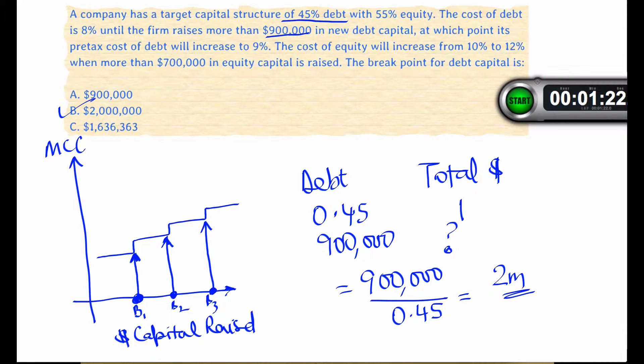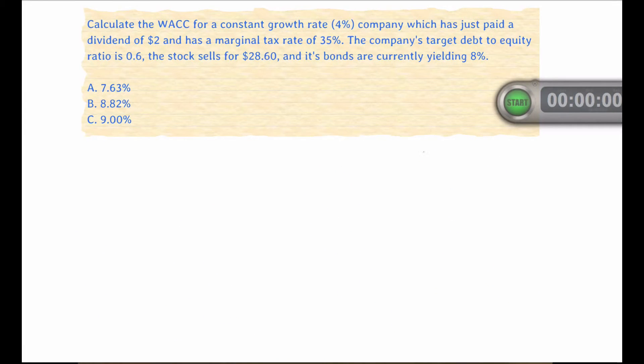Right, so let's look at the next example. Now here we're being asked to calculate the weighted average cost of capital. So we immediately recall the formula as the weight of debt times the rate or cost of debt times one minus the tax rate. Remember the debt portion is affected by the tax rate, plus the weight of common equity times the cost of common equity. So let's see what we're given.